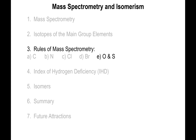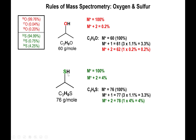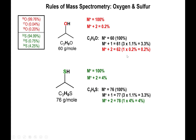For oxygen and sulfur: oxygen goes from oxygen-16 to oxygen-18, but the value is only 0.2% — effectively insignificant. For sulfur going from sulfur-32 to sulfur-34, the value is about 4% — not insignificant. So for sulfur we will see an M+2 peak, whereas for oxygen it rarely ever shows up in the spectrum.